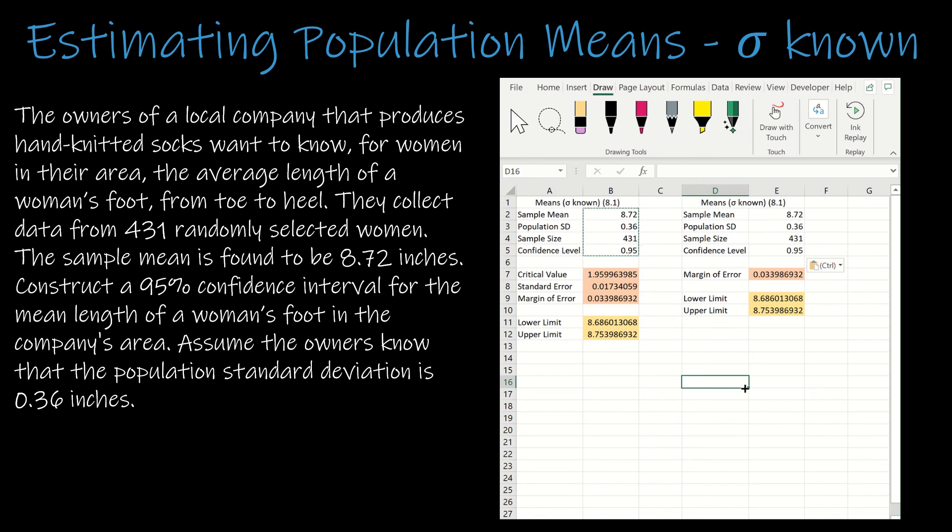Now, the answer, again, we have to know how to interpret the solution. So our interpretation of the solution is that we are 95% confident that the true mean length of a woman's foot in the company's area is between 8.69 inches and 8.75 inches.